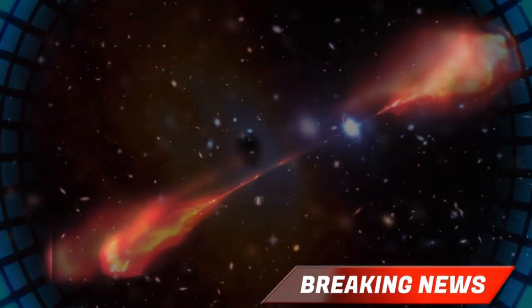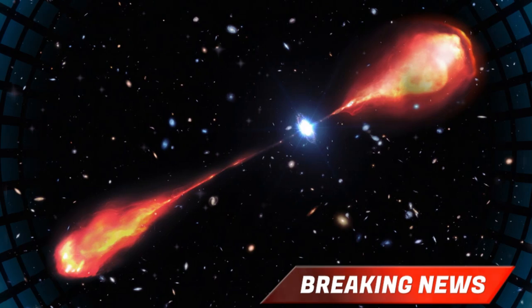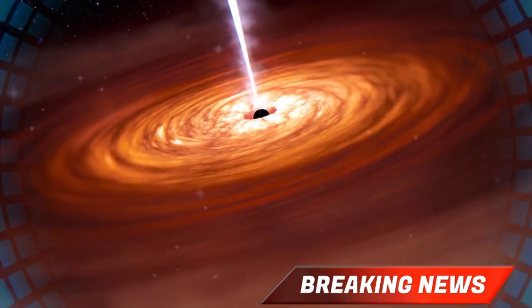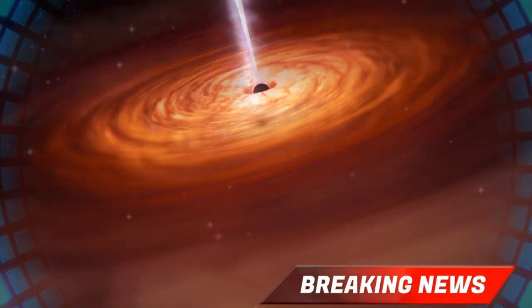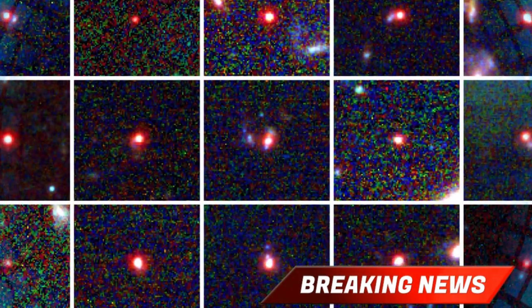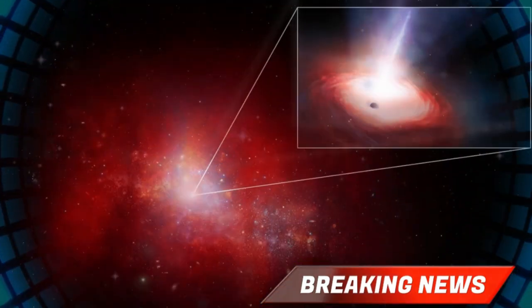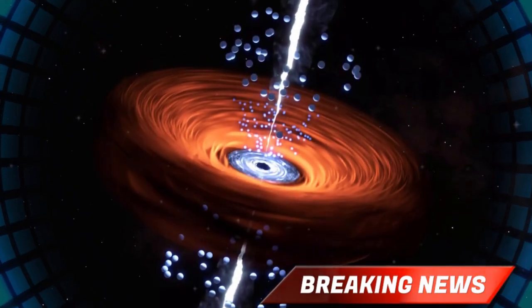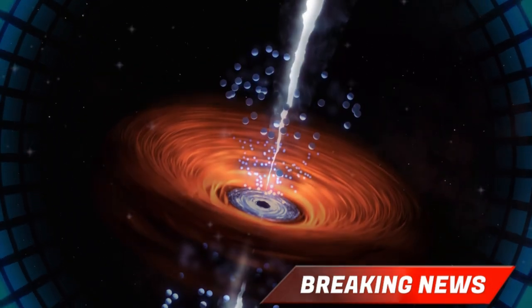By tracing back its growth rate, scientists tried to reconstruct the black hole's origins. What they found was even more surprising. It likely began as something ordinary, the collapse of a massive star less than 100 times the mass of the sun. In other words, it didn't require some exotic or impossible starting point. Instead, it grew to a billion solar masses simply by eating faster than it should have been able to.